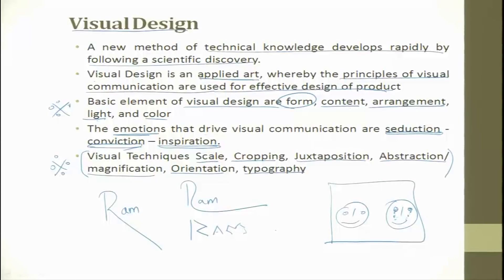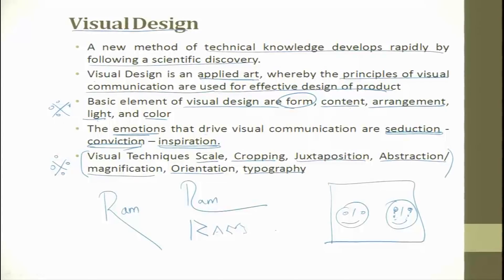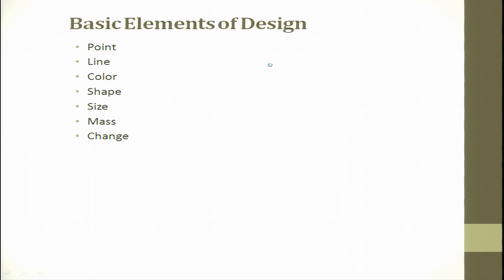After he buys, then comes the functional aspect, but what impresses is important. Please understand this is not going to be a unique solution. A taste I like, you might not like; a color I like, you might not like. It is very clear that there is nothing called a unique solution. Every time you understand the customer, look at the requirements, look at the ambience, look at the market, and then try to tweak the shape and form of the product using all these techniques to bring in the emotion in conveying to the customer. The basic elements of design are: a point, two points joined together is a line, then you have color, shape, size, mass and change.